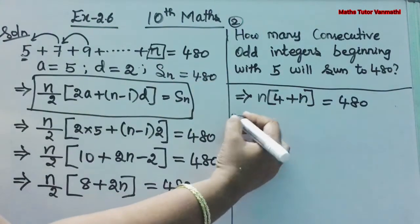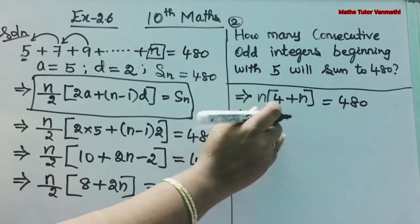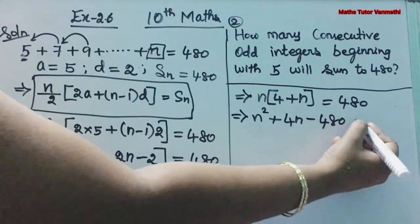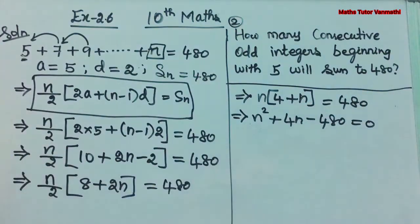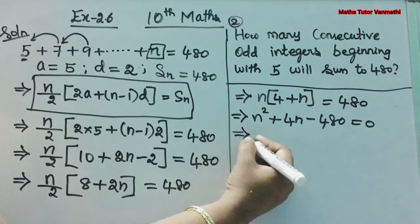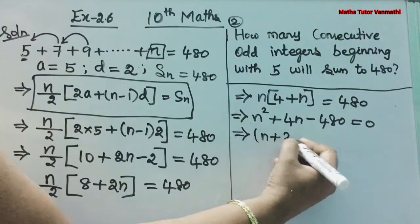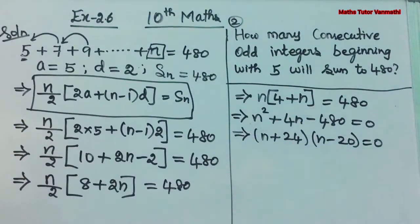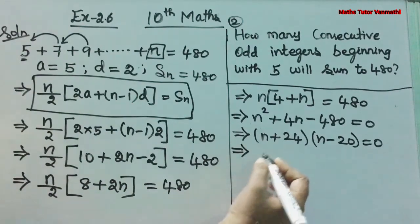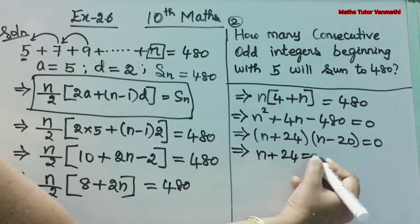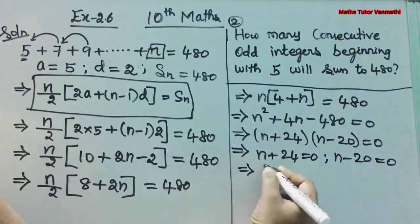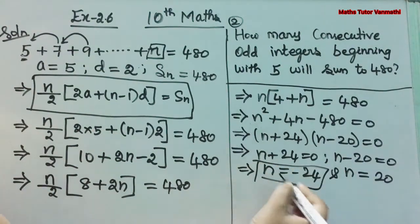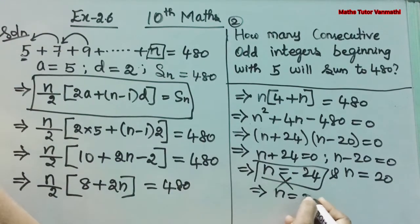Multiplying out, we get 4N + N² = 480, written from the highest power as N² + 4N − 480 = 0. Factorizing this gives (N + 24)(N − 20) = 0. From this, N = −24 or N = 20. We don't accept negative values, so N is equal to 20. This is our required answer.